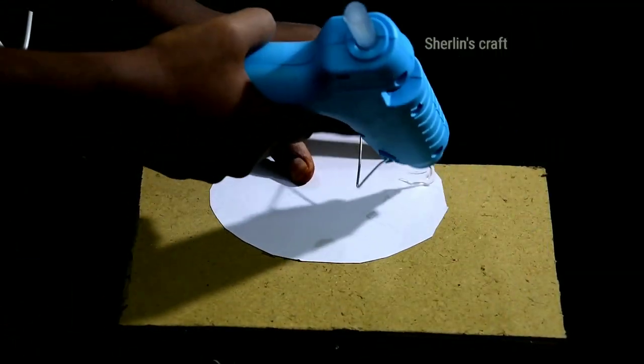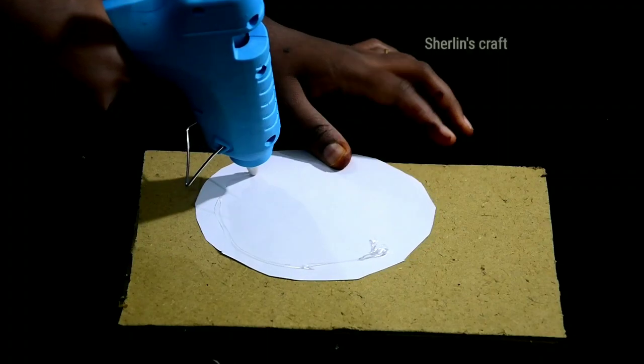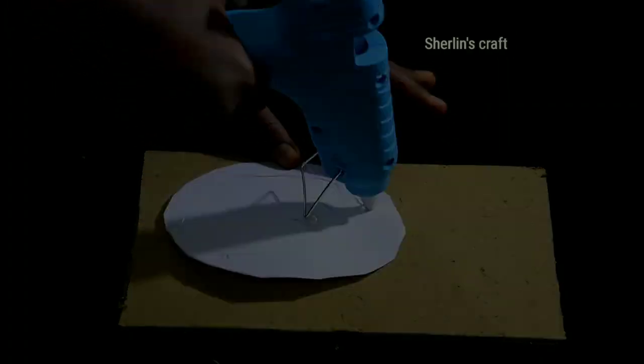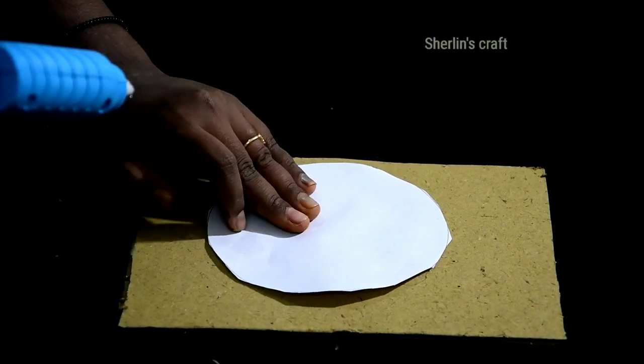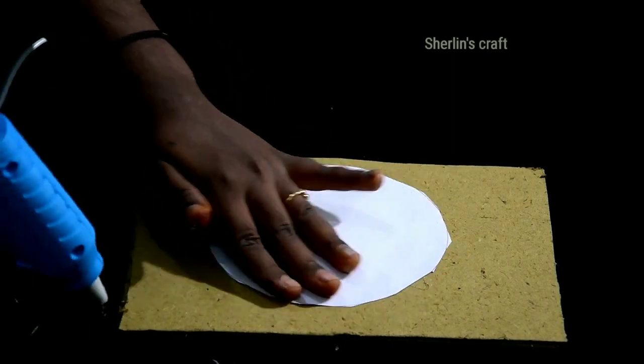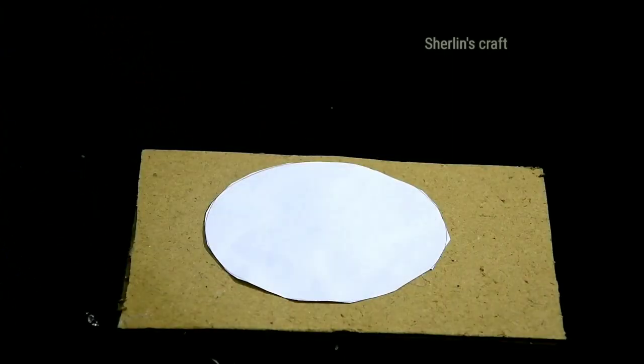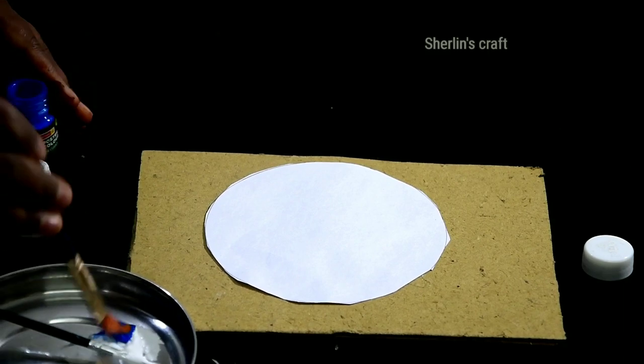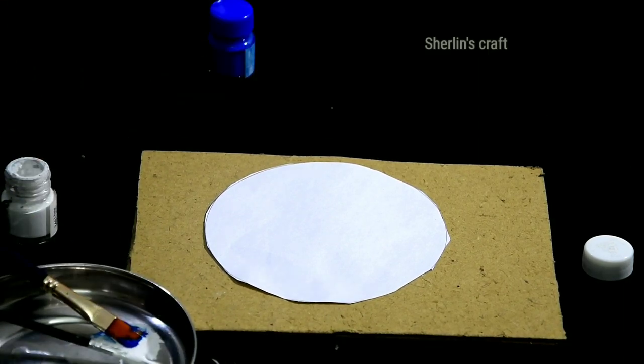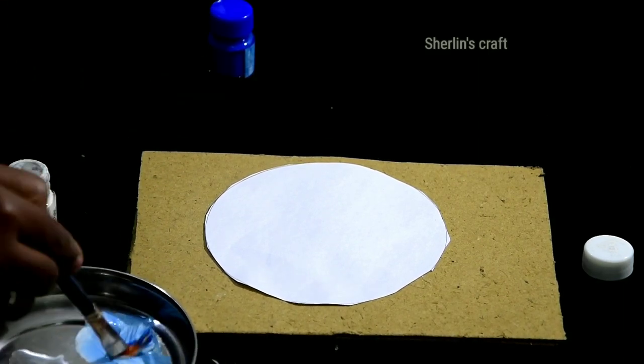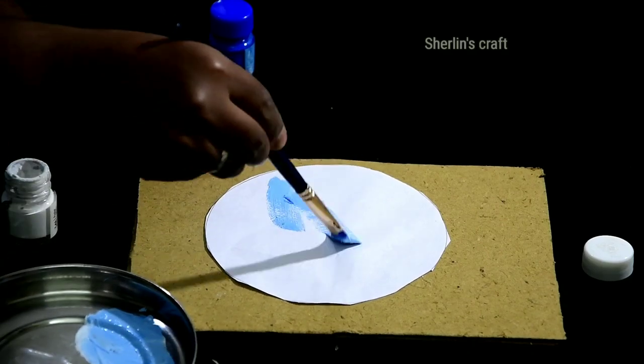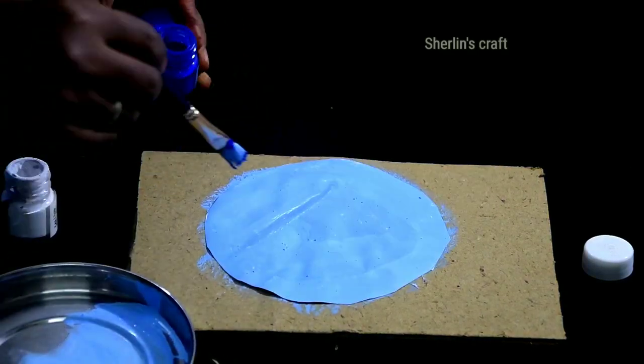Now we will put a white paper on the circle. We can also use fabric. Then we will mix the white and blue for the sky blue color. Apply the white paper on the base.